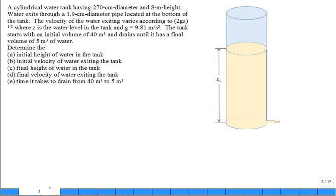Let's take a look at this problem. A cylindrical tank having a diameter of 270 centimeters, we'll introduce capital D for the diameter of the tank, 270 centimeters or 2.7 meters, and a height of 8 meters. We'll put H equal to 8 meters.